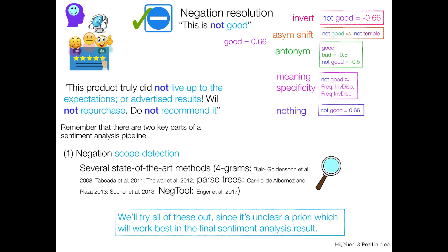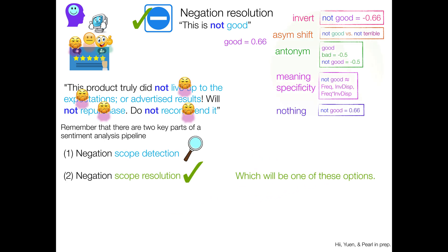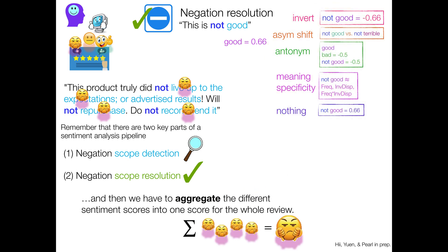And then, of course, we have the resolution, which is going to be one of these different options. And then, last part, we actually have to aggregate the different sentiment scores into one score for the entire review. And there are kind of two ways to do this. We can try flat averaging, just average your scores, or aggregate structurally using a parse tree. Again, a priori, we don't know which one will work better, so we'll use both of them.